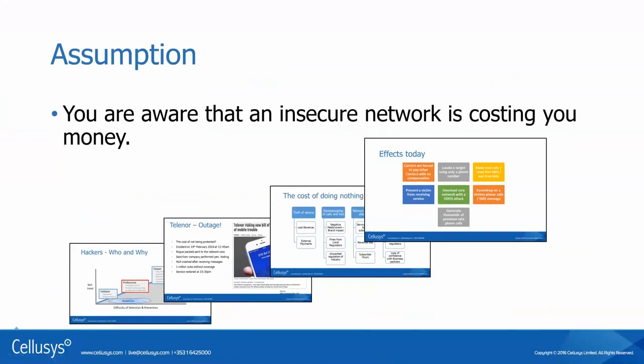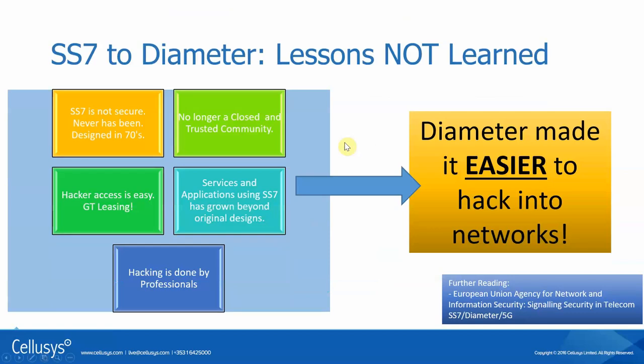This presentation is going to make the assumption that you're already aware that an insecure network is costing you money. If you're not familiar with that, please check this space — there'll be another video discussing those topics. Diameter is a signaling protocol used in the LTE network. It's in the back, controlling how things operate.